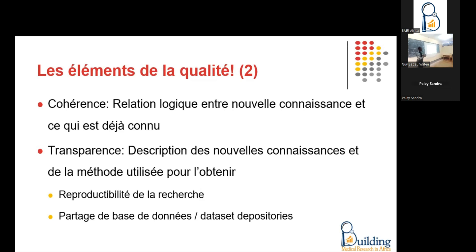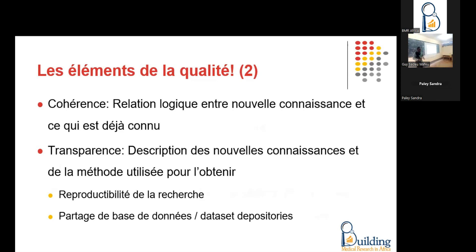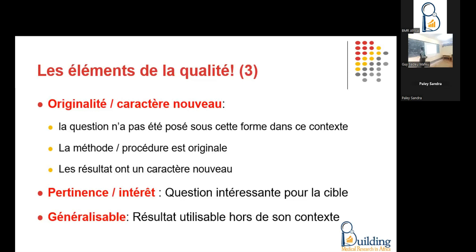Donc c'est vraiment important d'être transparent, de présenter ce qu'on a fait de manière traçable et reproductible. L'autre élément de la qualité, c'est l'originalité — apporter une nouvelle information. Une étude qui n'a rien de nouveau, c'est un gâchis, c'est un temps qu'on perd. C'est ça qui rentre dans les 85% d'études qui sont un gaspillage de ressources parce qu'elles n'apportent aucune information nouvelle.